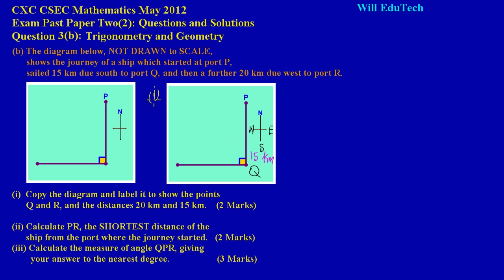From port Q, the ship then sailed a further 20 kilometers due west to port R. West is to the left on the compass, so from Q I go left and place port R there, labeling it 20 kilometers. That completes Part 1 — the diagram is labeled with points Q and R and both distances.